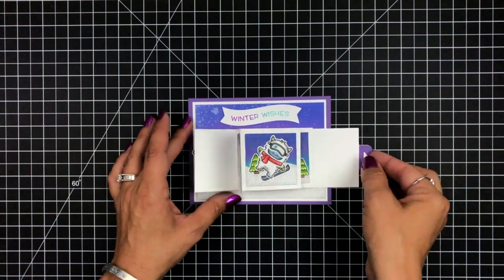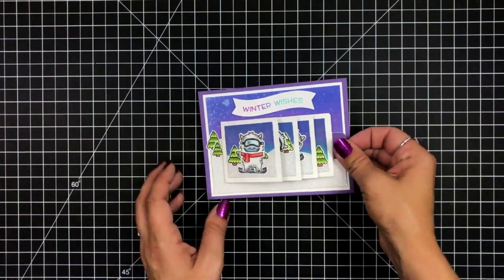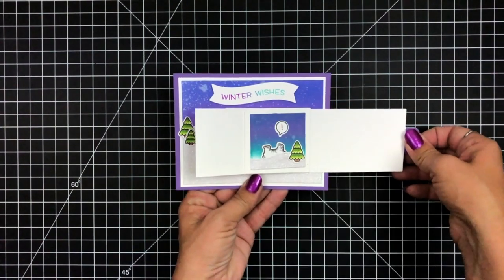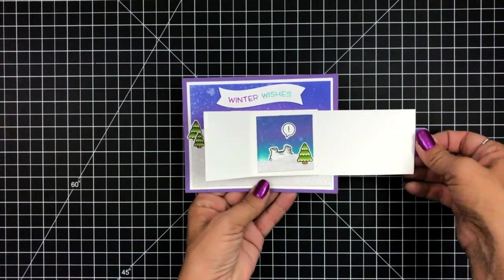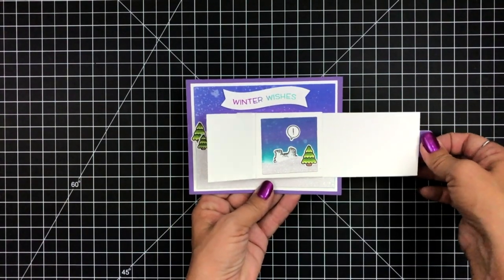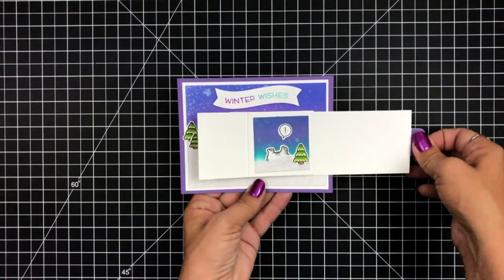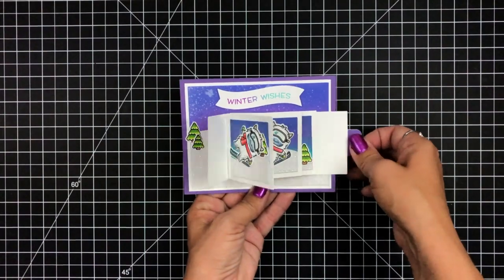So now we'll take a look at everything in action. You just pull that tab on the side and there is our Flippin' Awesome little flip book. I love the scene that you can create with these. You can do any type of images on here. I think the Yeti was just so super adorable and perfect for this.